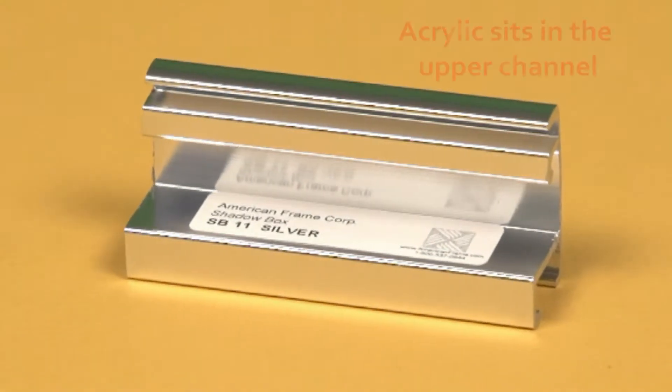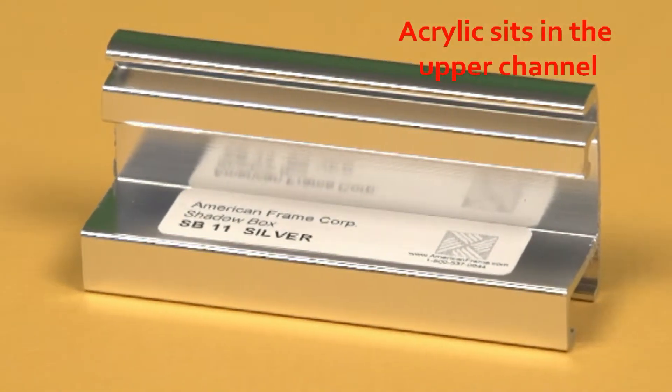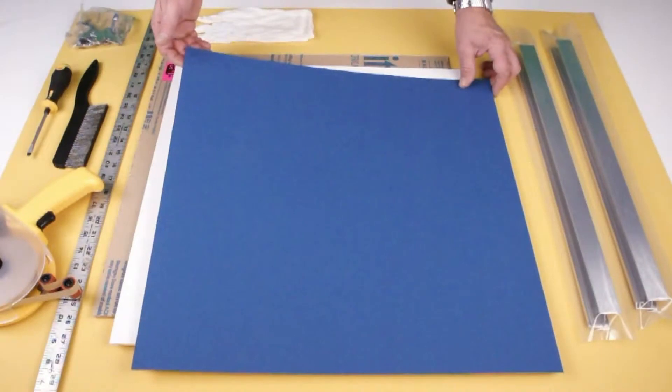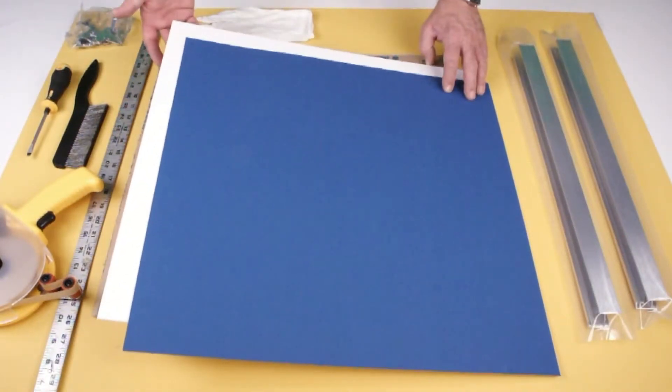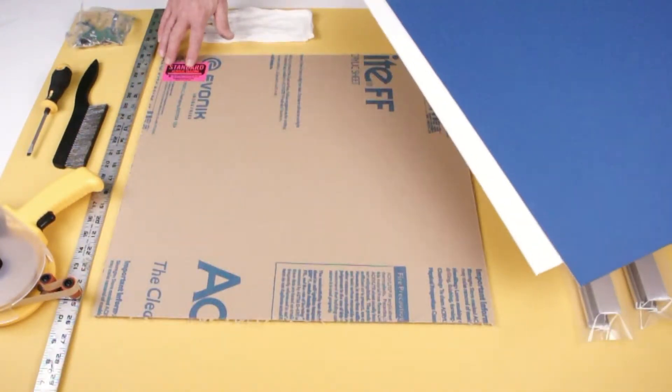The American Frame SB11 Shadow Box Frame. Start off with the matte board color of your choice, foam core backing board, and plexiglass.